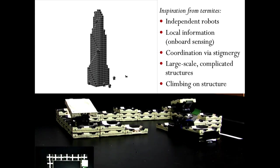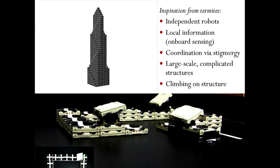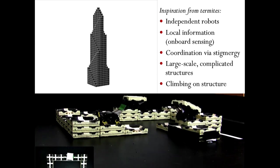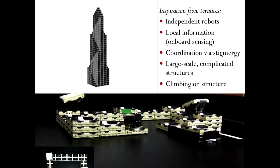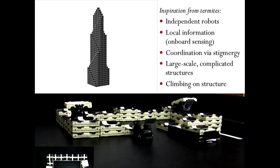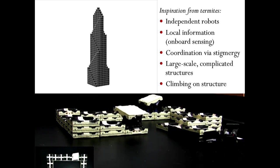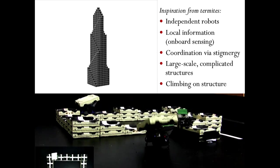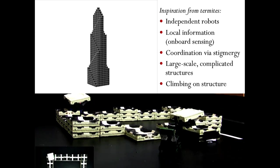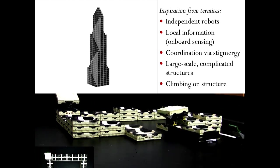We've got independent robots limited to what they can sense with their own sensors. They don't have an external camera or GPS. They're building large-scale things, climbing over structures in progress to reach places they couldn't otherwise access, so the size of what they build is not limited by the size of the robots. They coordinate via the termite-inspired idea of stigmergy — looking at where material has already been put down and using that to decide where to put additional material.